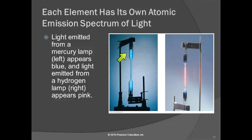Here on the left we have a mercury lamp, and this is the same idea as a neon light. We have a glass tube and it's got mercury vapor in it, and then we apply a voltage across it, we run electricity through it, and the mercury lamp gives off a blue light. Over here on the right is a hydrogen lamp and that gives off pink light. So each element is going to give off its own color of light.